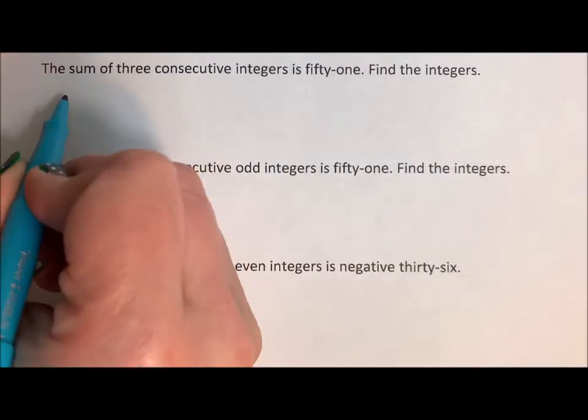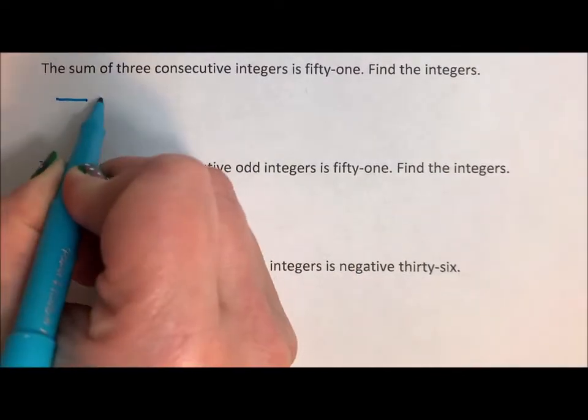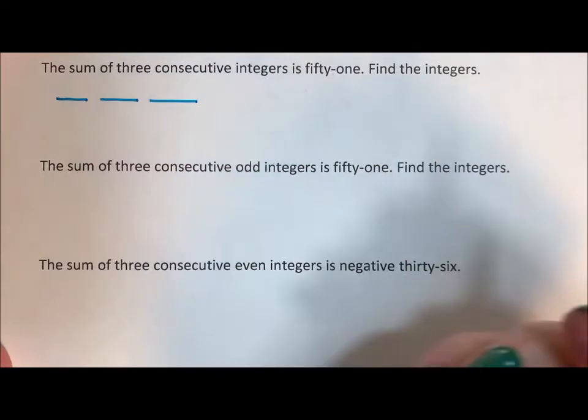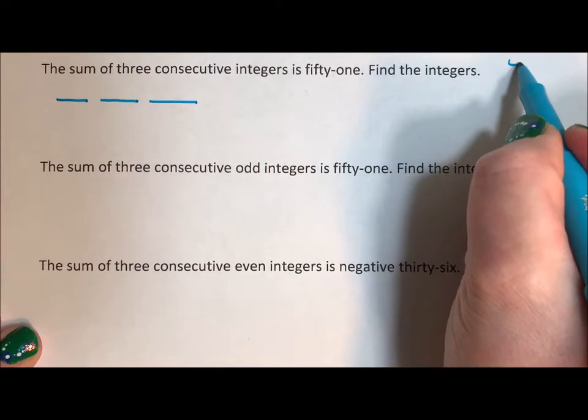So one way to think of them is I have three integers: one, two, three. So consecutive integers are like four, five, six.